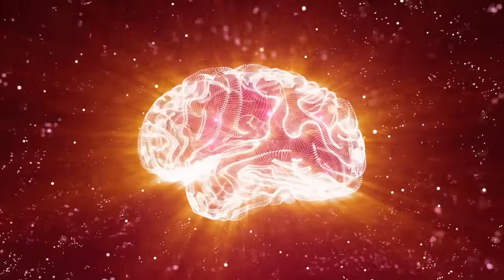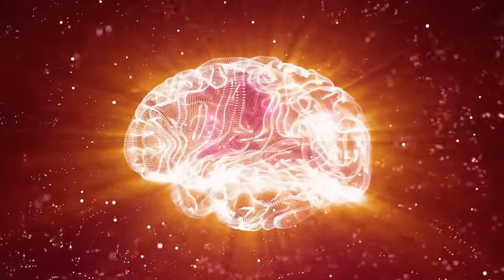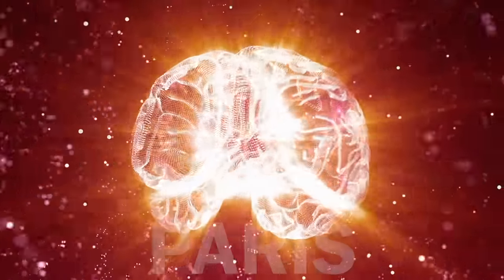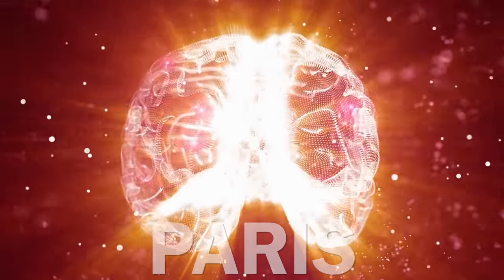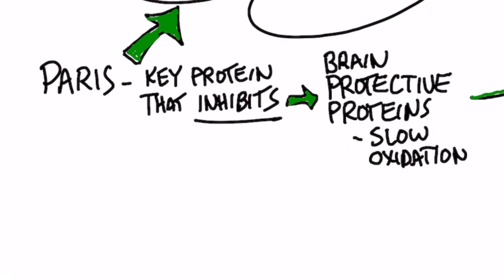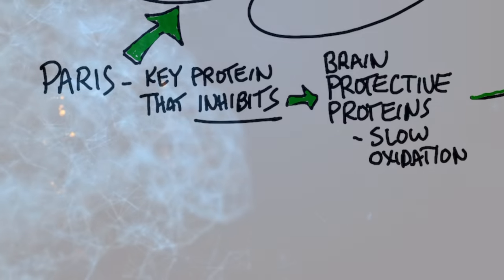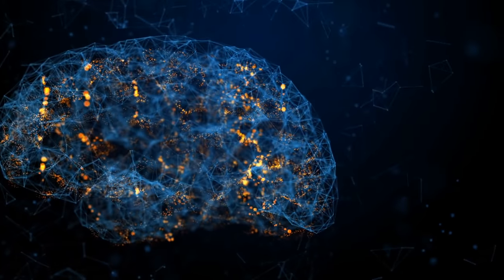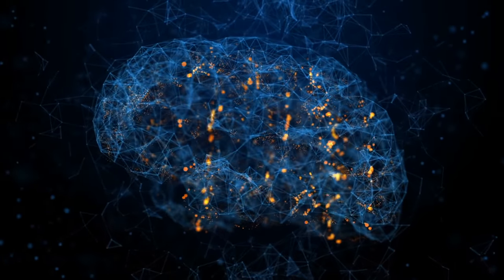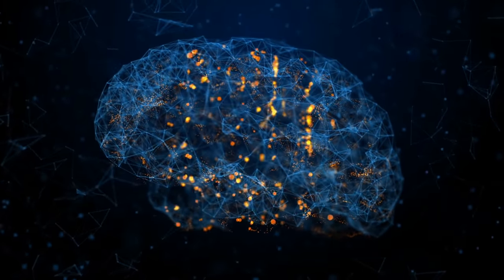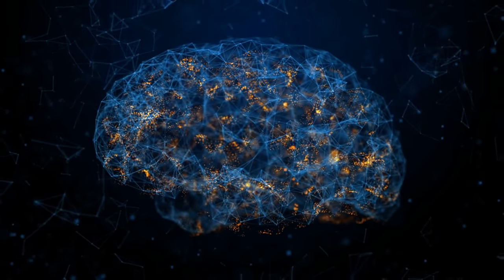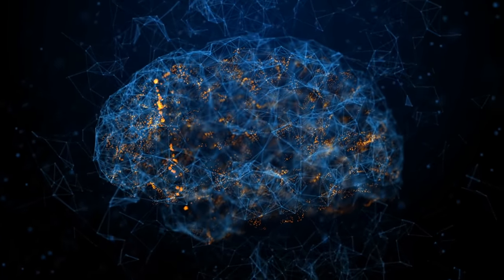So apparently in the brain, there is a protein called Paris. I'm not going to give you the long name. And the protein Paris basically inhibits or stops the protective proteins, these other proteins that are supposed to protect the brain against oxidation. So normally in the brain, you have this whole series of proteins that are supposed to protect the brain against certain degenerative diseases. Well, Paris comes along and stops that protection from taking place.